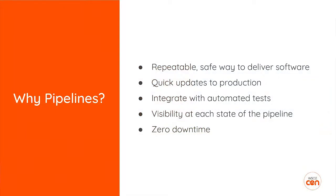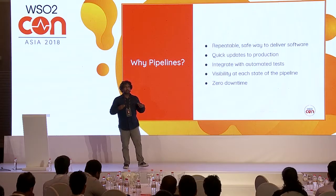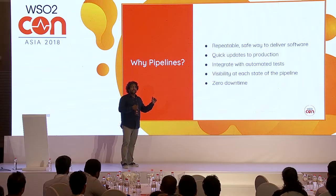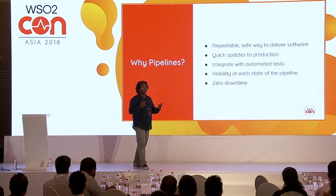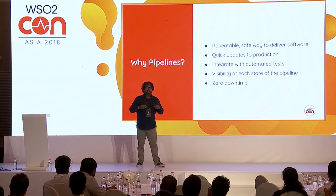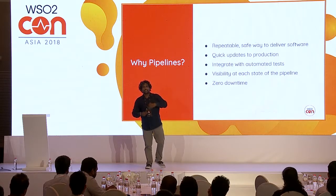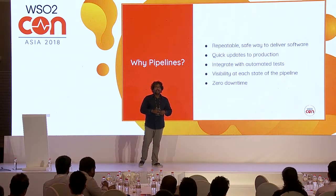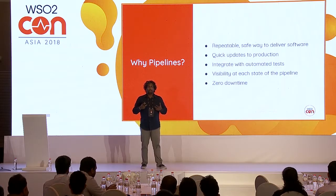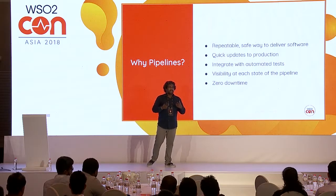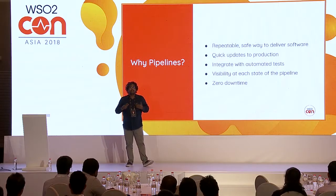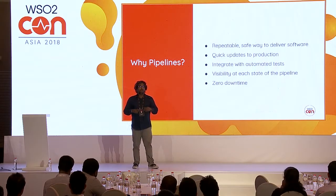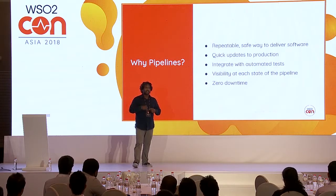So why do we need pipelines? Pipelines give you a repeatable, safe way to deliver software changes all the way into production through different stages as quickly as possible. Pipelines enable you to integrate multiple systems together so you can always guarantee that the code going into production is well tested for various aspects and is in a safe condition. You get visibility at each stage — what's happening, what tests are failing, whether the code has vulnerabilities built into it.